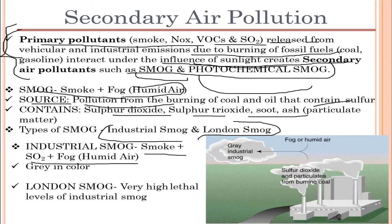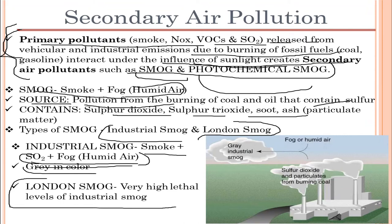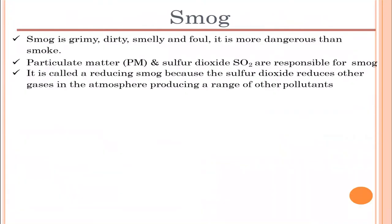Industrial smog is the combination of smoke, sulfur dioxide, and fog. Sulfur dioxide is released from various industrial processes and the burning of coal and oil. The color of industrial smog is green, and it leads to the formation of humid air in the environment. London smog, on the other hand, refers to a very high, lethal concentration of industrial smog.